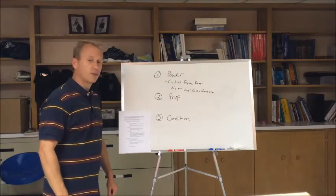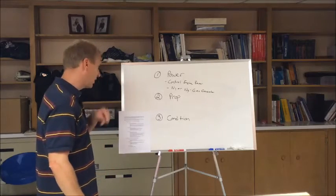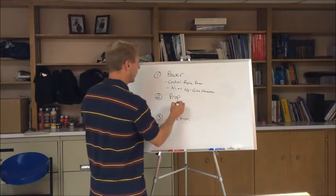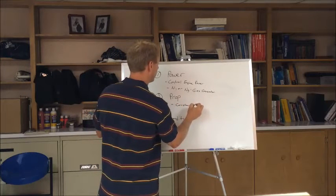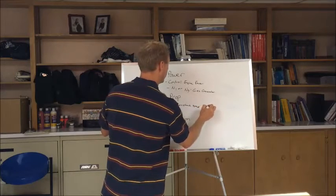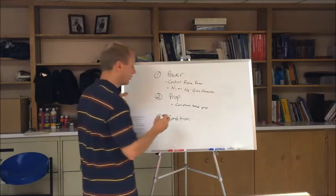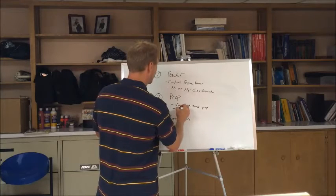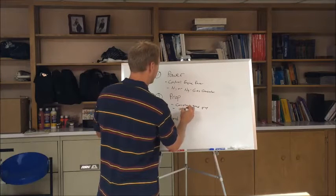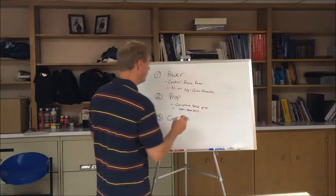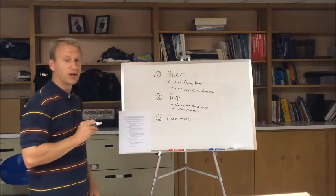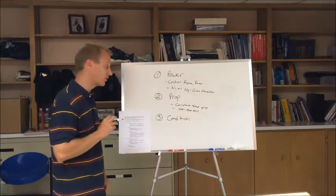The second lever is the prop lever, which controls your constant speed propeller through the primary governor within a range of approximately 1500 to 1900 RPMs. The prop lever will also put the propeller into the feather position.